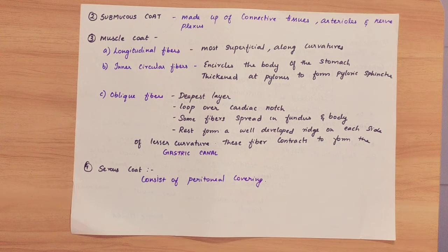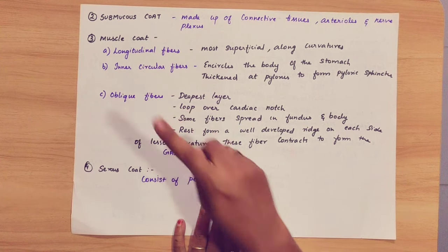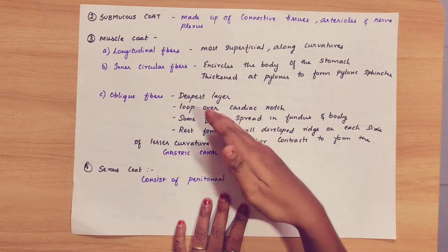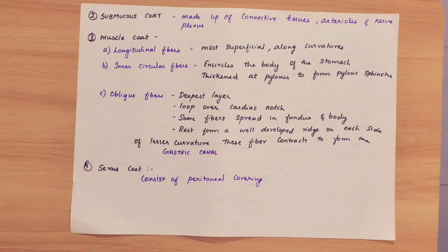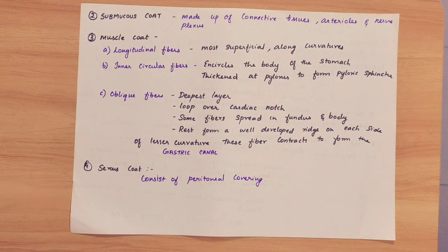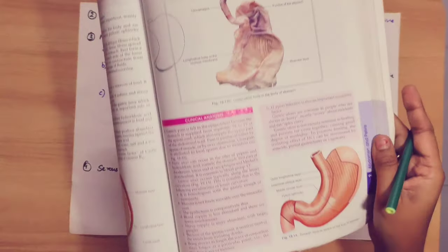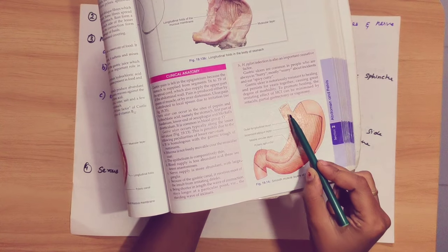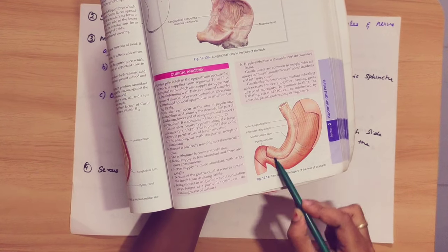First, there are longitudinal fibers, which run along a straight line. Then circular fibers in a circle shape, and oblique fibers running diagonally. Longitudinal fibers are the most superficial and run along the two curvatures — the greater curvature and lesser curvature. This outer longitudinal layer is the most superficial compared to the other two fiber types, as you can see in this diagram.